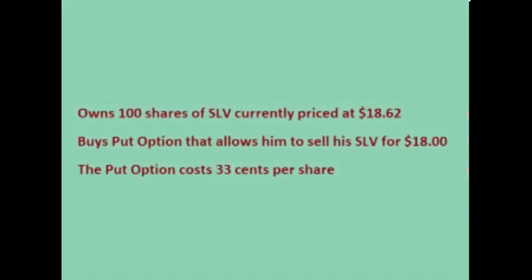The trader had 100 shares of stock, currently priced at $18.62 per share, worth $1,862 total. He buys a put option for $33 total, locking in the right for him to sell that stock for $18 a share anytime between the time he purchased the option and the time the option expires in a month, should the price drop. So for $33, he has locked in the right to sell his SLV for $18, effectively placing a floor on the amount he can lose.